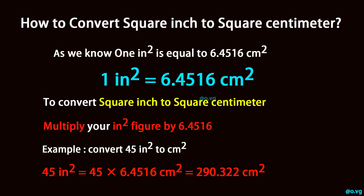Example: convert 45 square inch to square centimeter. 45 square inch is equal to 45 times 6.4516 square centimeter, which equals 290.322 square centimeter.